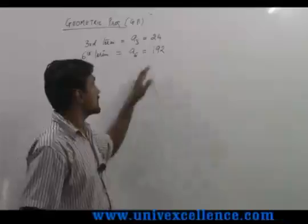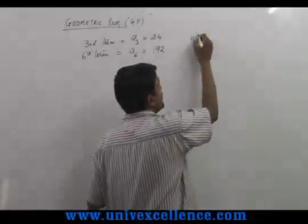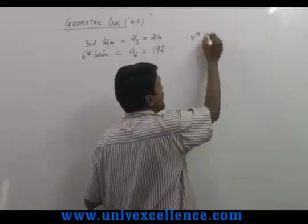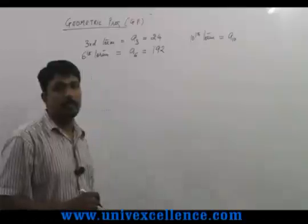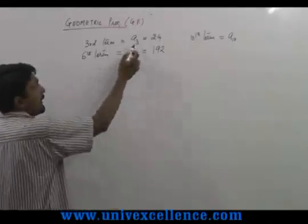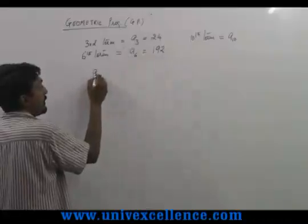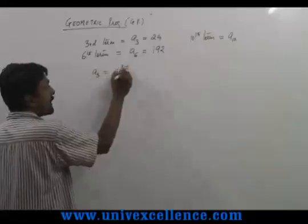The question asks you to find the 10th term, a10. First, we use a3 = 24, which equals a times r to the power 3 minus 1.